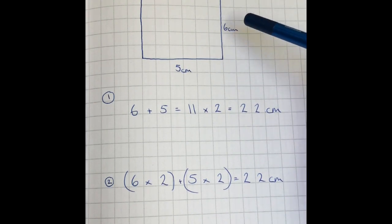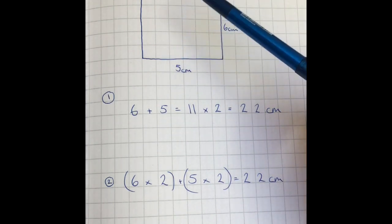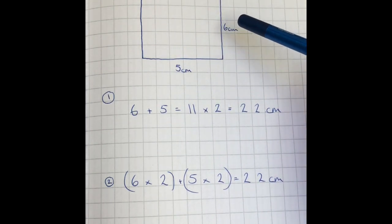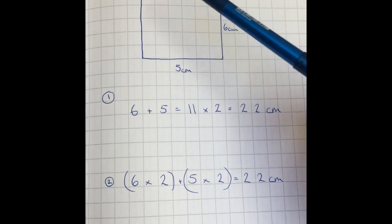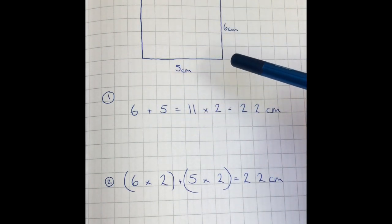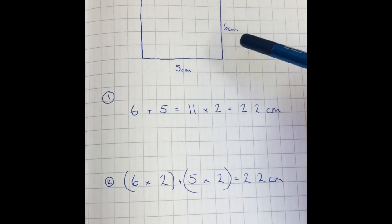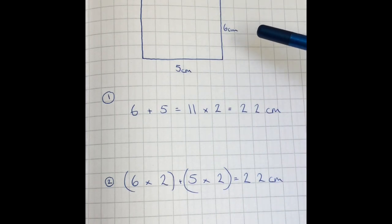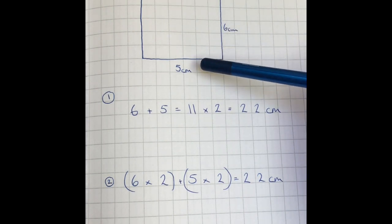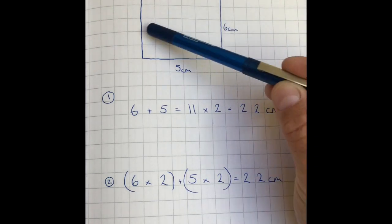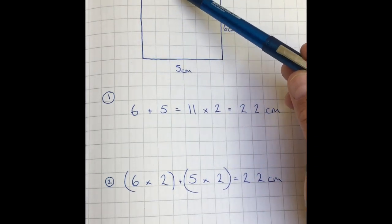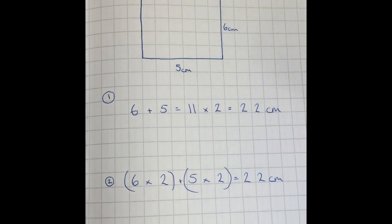Here we have our shape, a rectangle. One length is six centimeters and the other length is five centimeters. Remember from yesterday that the perimeter is the total length around the outside of a shape. To work out the perimeter, we go six plus five gives us eleven, plus six equals seventeen, plus five is twenty-two.